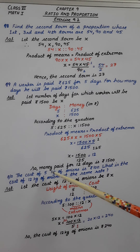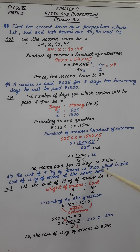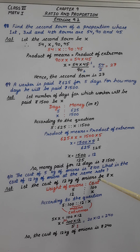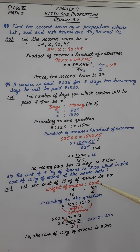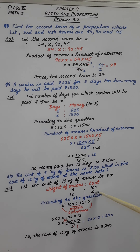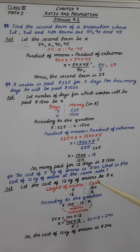Coming to the 10th question: the cost of 5 kg of onions is Rs. 100. What is the cost of 12 kg of onions at the same rate? Let the cost of 12 kg of onions be Rs. X. Writing it in ratio form, comparing weight and cost: 5 kg costs Rs. 100, and for 12 kg the cost is assumed as X. We write it in proportion form: weight 5 kg and cost Rs. 100, then proportion with weight 12 kg and cost X.